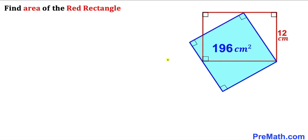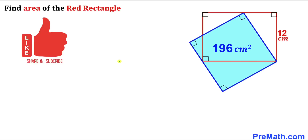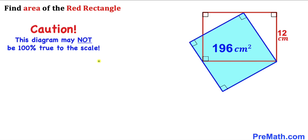Welcome to Pre-Math. In this video we have a blue square and a red rectangle put together as shown in the diagram, such that the area of the blue square is 196 cm² and one of the side lengths of the red rectangle is 12 cm. We are going to calculate the area of the red rectangle. Please don't forget to give a thumbs up and subscribe.